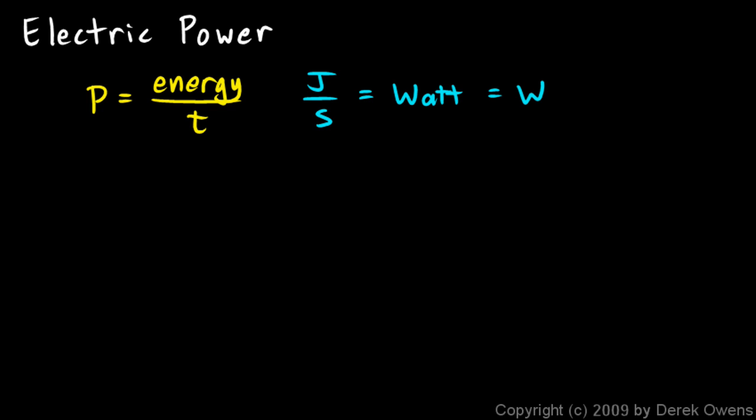And joules per second is a watt, one watt or just capital W. One joule per second is one watt. Now electrically, power is still energy over time. We're just talking about electrical energy now, not kinetic energy or gravitational potential energy, but power electrically is still energy over time.